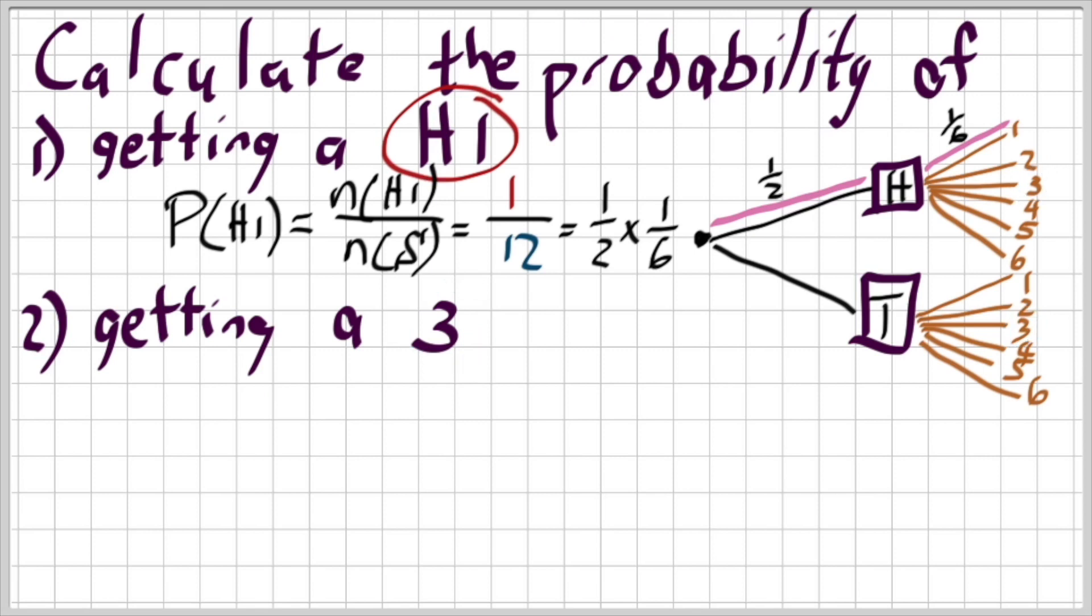Let me just quickly go back. I went ahead on the video. My apologies. So to recap, if I want to get to that end point which is a head and a one, I say the probability of a head and I multiply it by the probability of a one. So one over two times by one over six. That is the safer option in terms of probabilities, especially later on when the probabilities are not independent. So the outcome of your first leg will affect the outcome of your second leg.